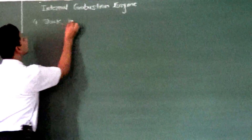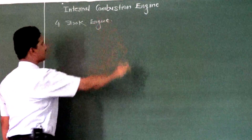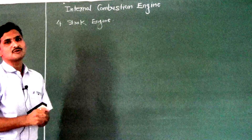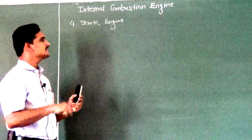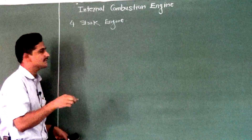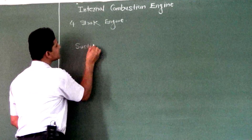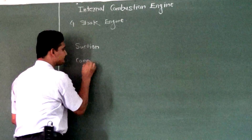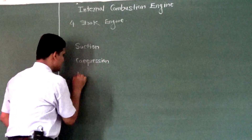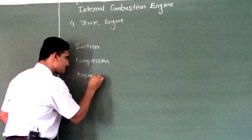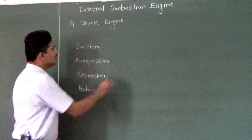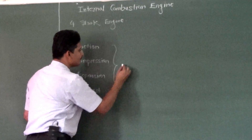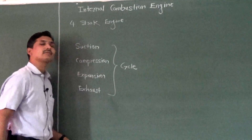Let's consider a four-stroke engine. According to number of strokes there are two classifications: four-stroke engine and two-stroke engine. As far as the engine is concerned, there are four processes happening inside the engine. Those four processes are: suction, compression, expansion, and exhaust. These are the four processes which happen inside the engine, and combining these four processes we form an engine cycle.